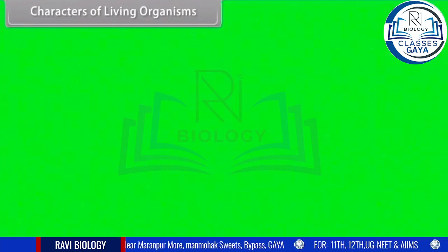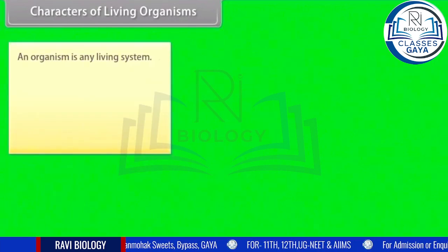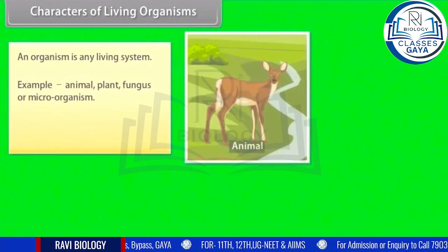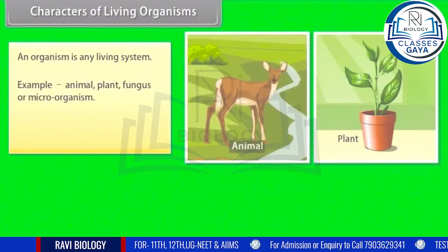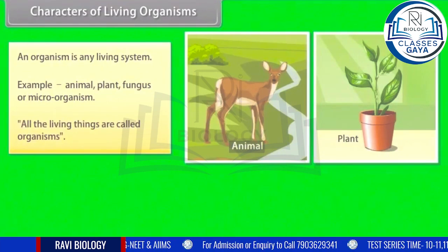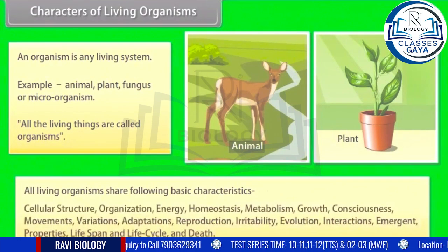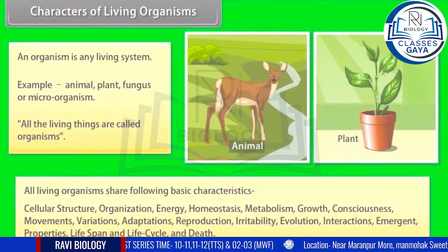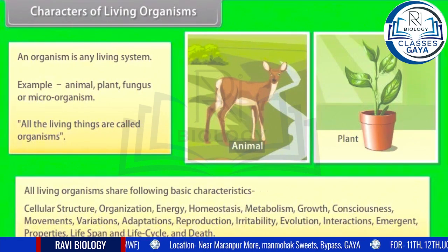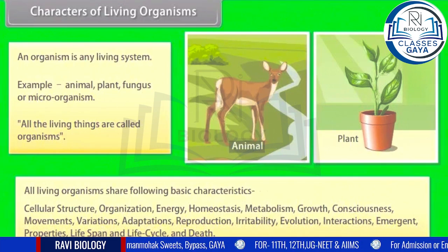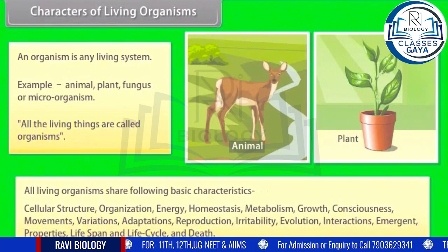Characters of living organisms: an organism is any living system — for example, animal, plant, fungus, or microorganism. All living things are called organisms. All living organisms share the following basic characteristics: cellular structure, organization, energy, homeostasis, metabolism, growth, consciousness, movements, variations, adaptations, reproduction, irritability, evolution, interactions, emergent properties, lifespan and life cycle, and death.